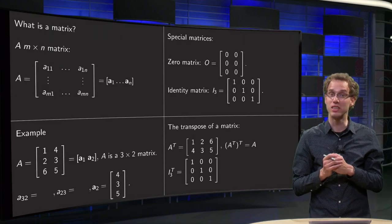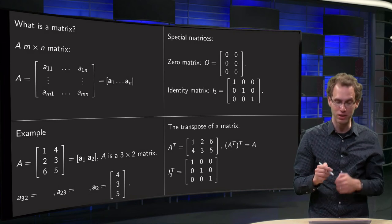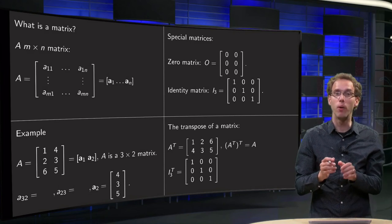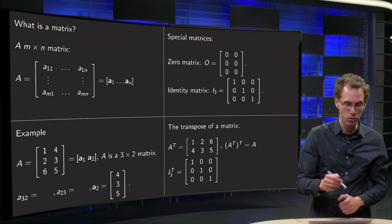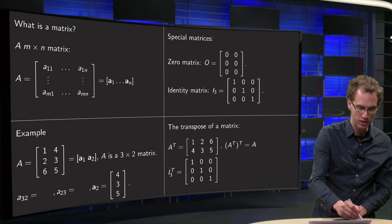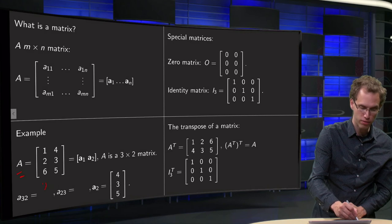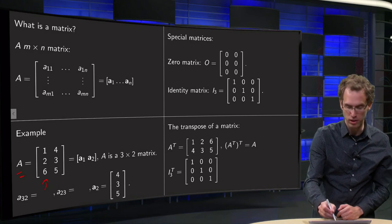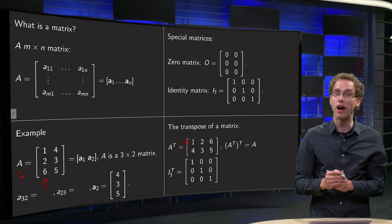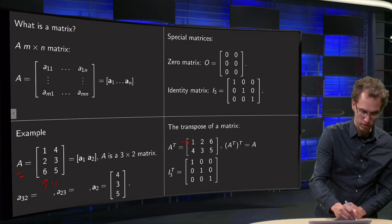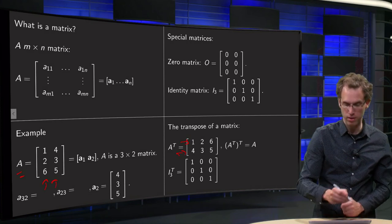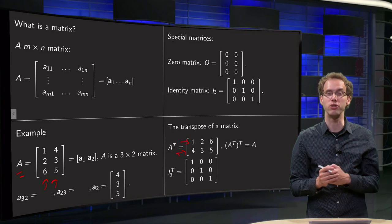Then finally, let us look at the transpose of a matrix, and we get the transpose of a matrix A by interchanging rows and columns. So if you start with your matrix A over here, you get the transpose as follows: you take the first column, 1, 2, 6, and then you turn that into the first row, and then you take the second column, 4, 3, 5, and turn that into the second row, and so on and so on.